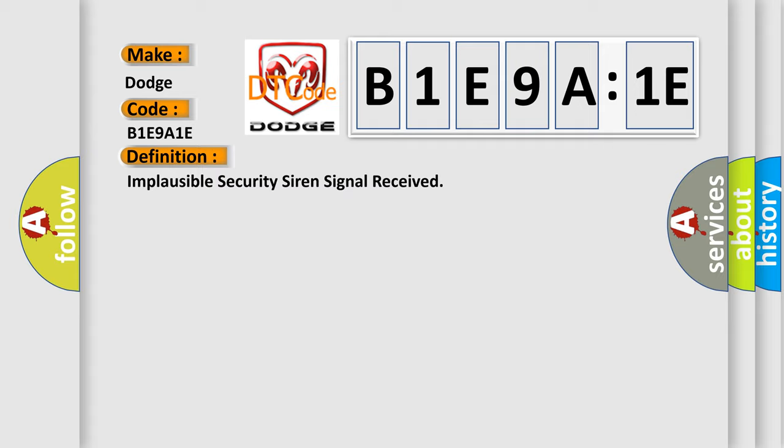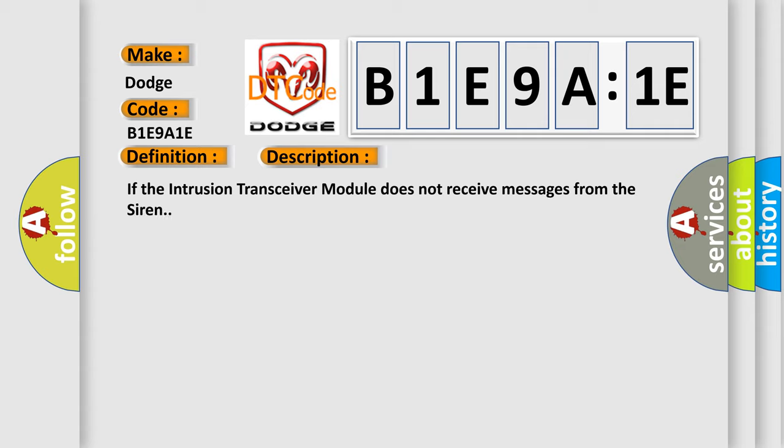And now this is a short description of this DTC code. If the intrusion transceiver module does not receive messages from the siren.